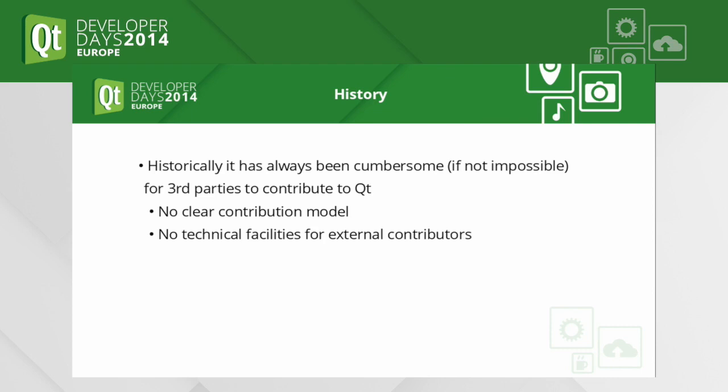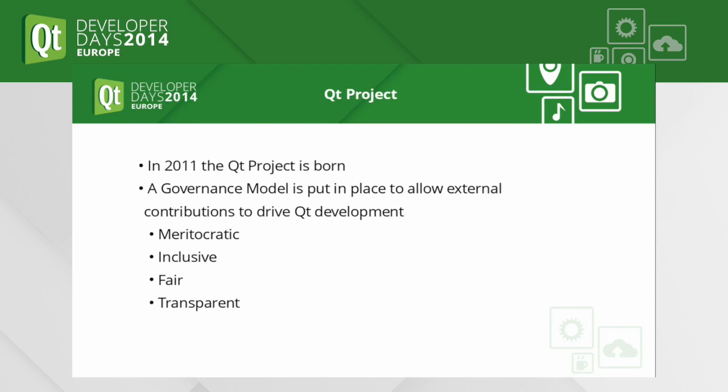In 2011, almost precisely three years ago, the Qt project was born. It was an open source project and we decided to borrow guidelines from other open source projects. We decided to implement a governance model, which defines how the Qt project drives itself, and we chose to follow the principles behind every open source project.